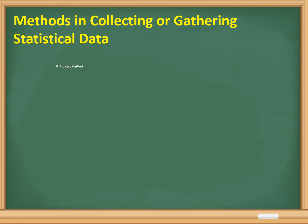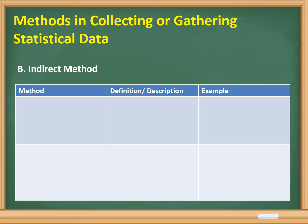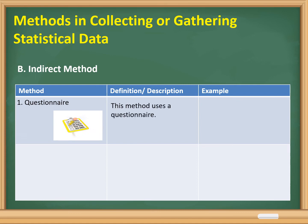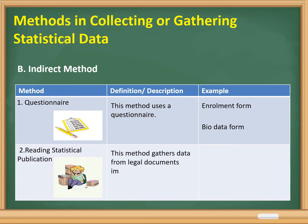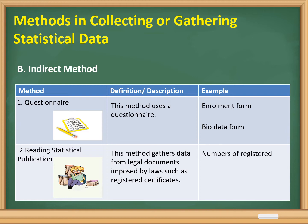Next, let us discuss the indirect method. Number one, we have questionnaire. Examples include enrollment forms and bio data forms. Number two, reading statistical publications — this method gathers data from legal documents imposed by law, such as registered certificates. Examples include the number of registered voters in San Pablo City and the population of Region 4A.